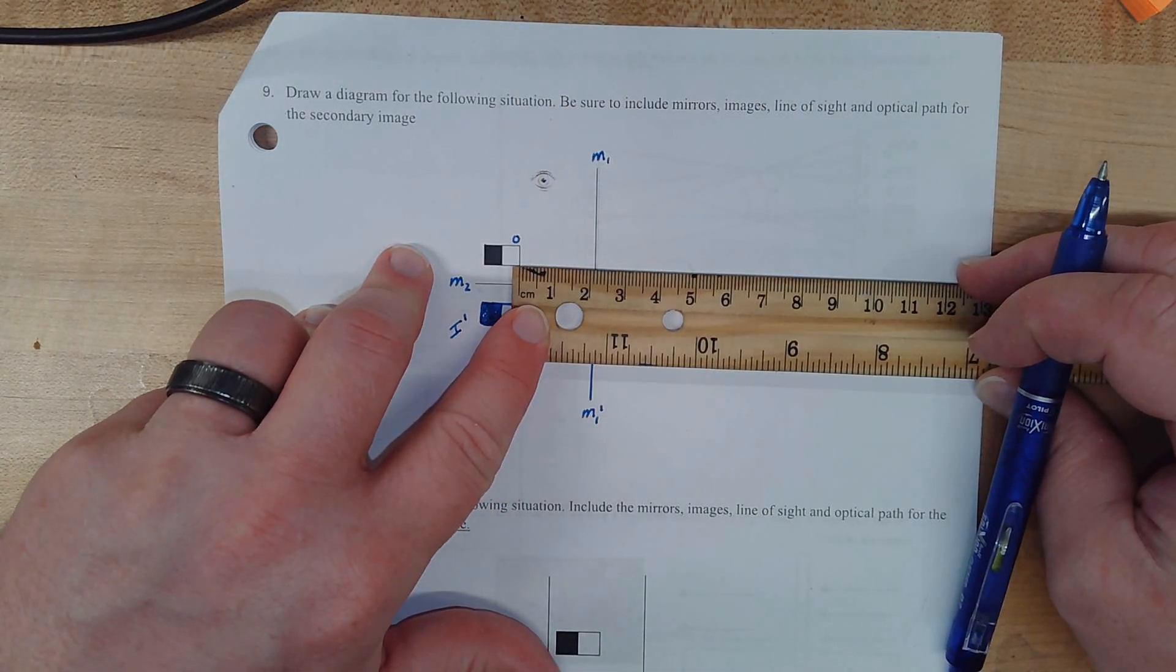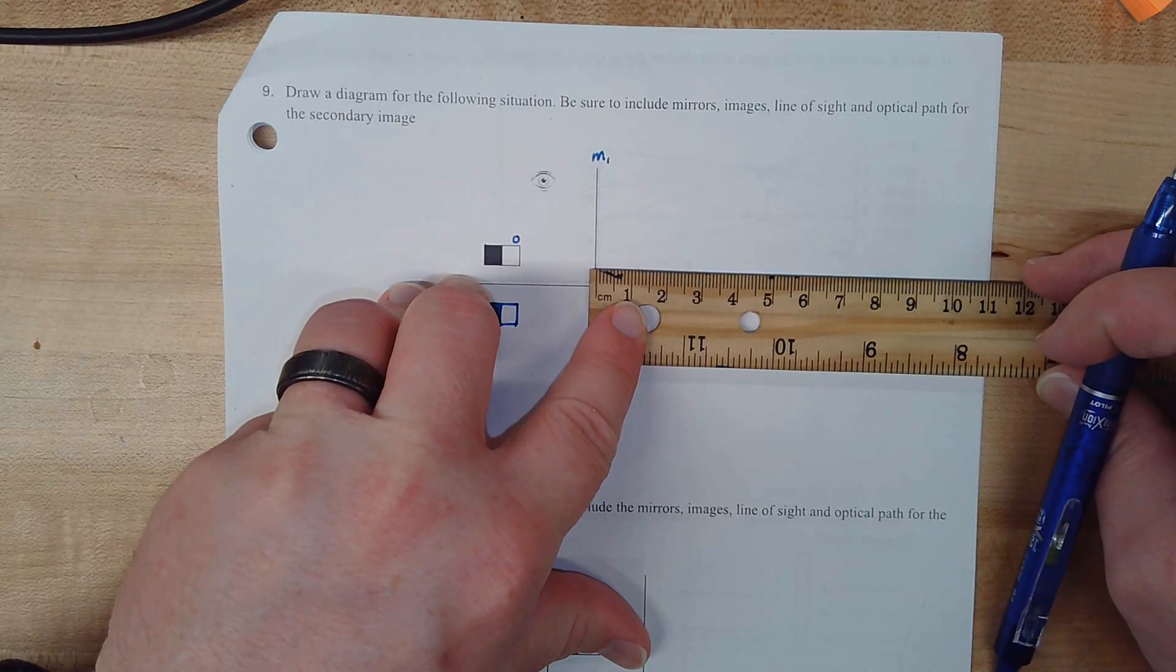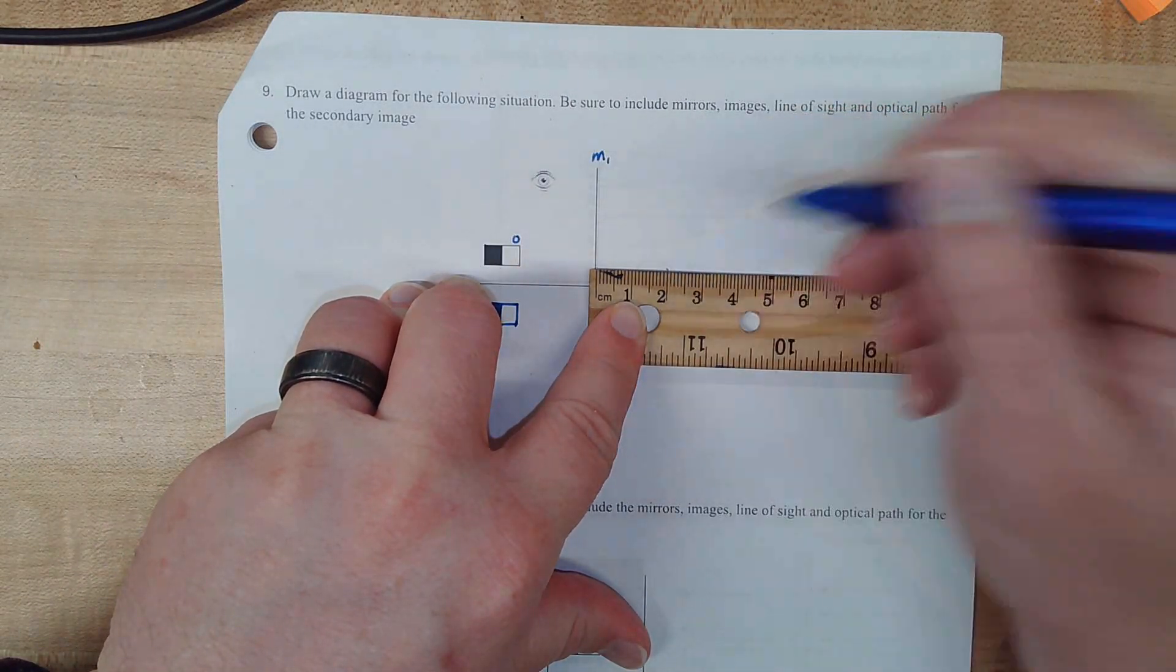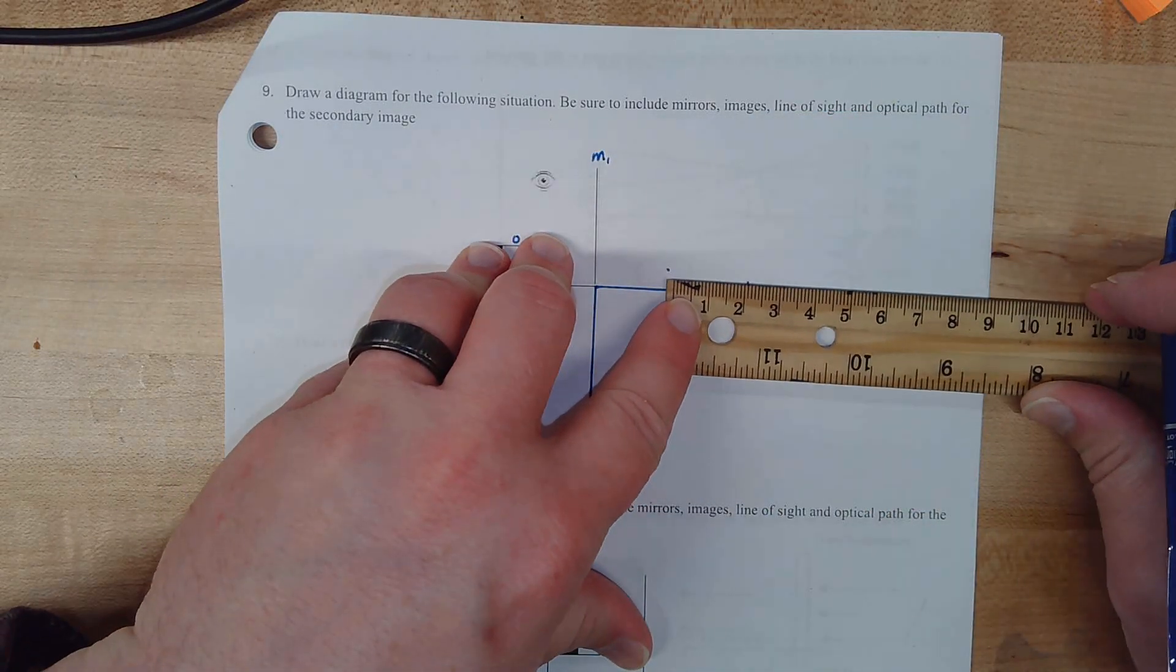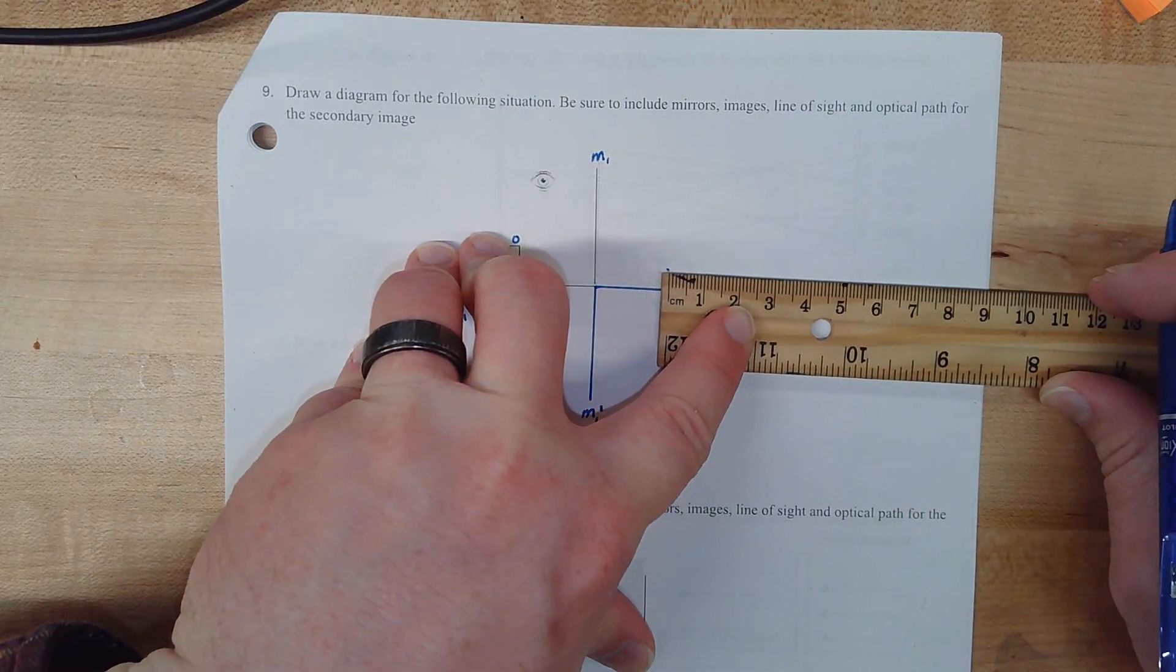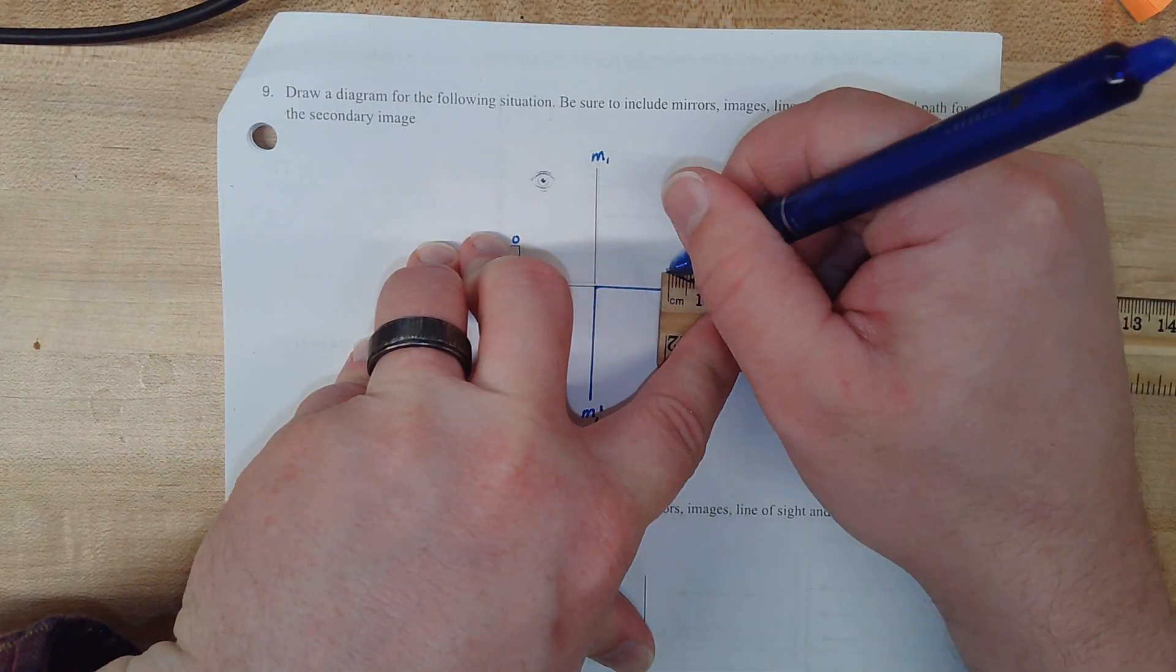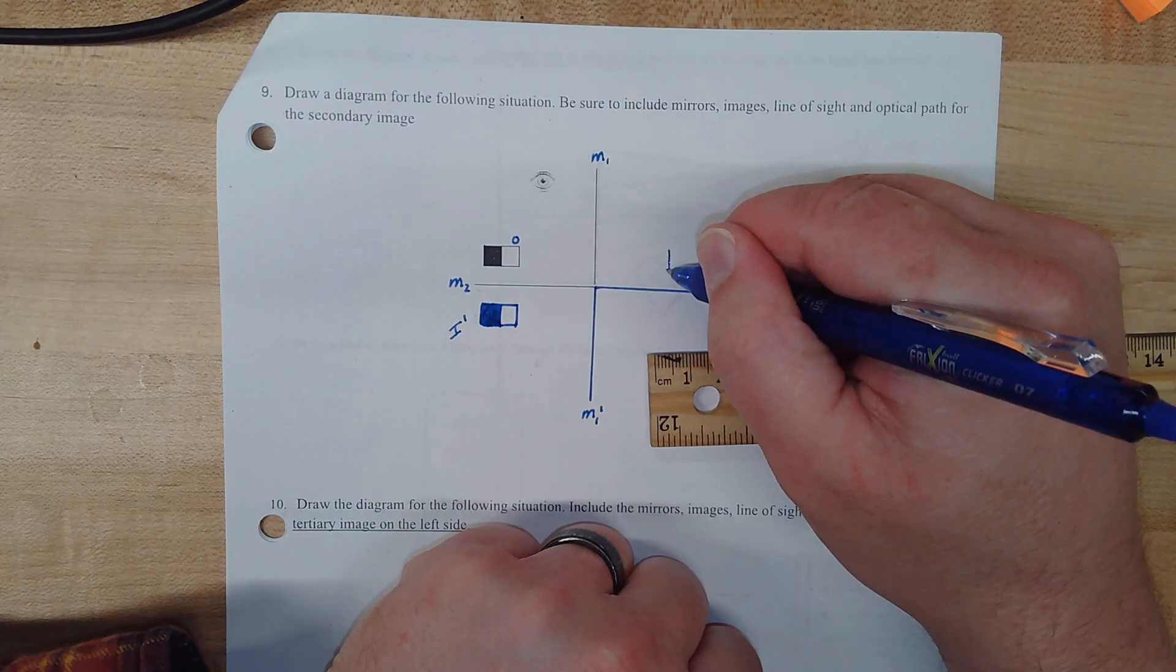Now we're going to do the same thing over here. We're going to measure the distance. I see about 20 millimeters between the object and that mirror. So we're going to create our reflection on the other side of that.